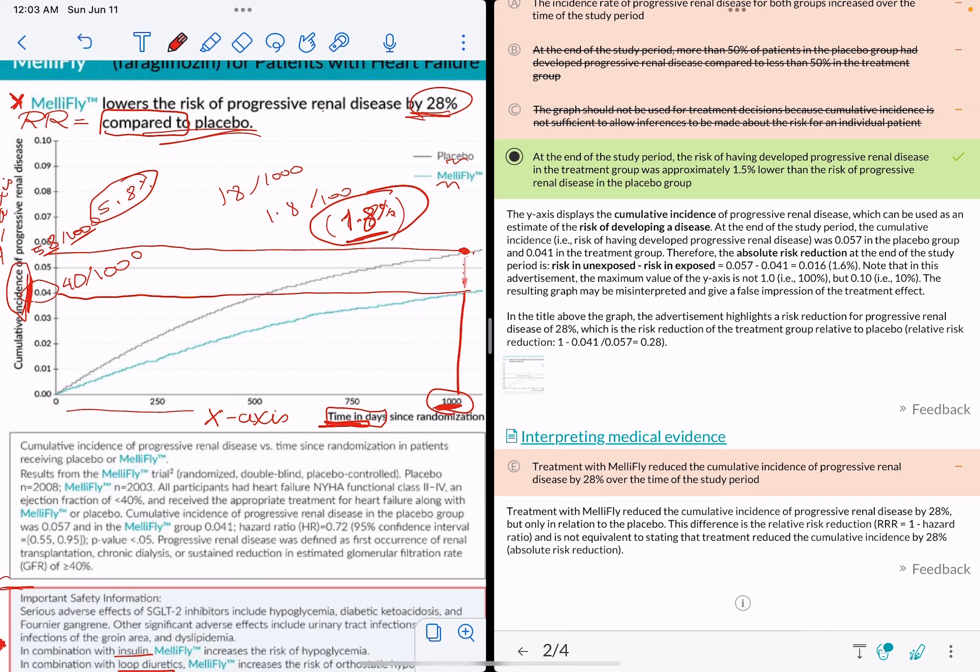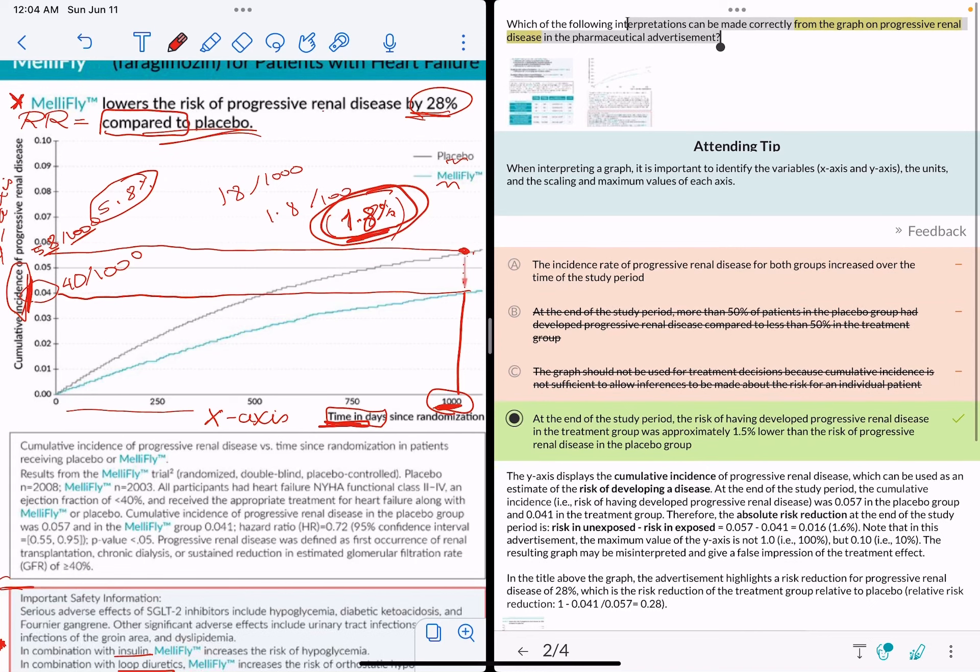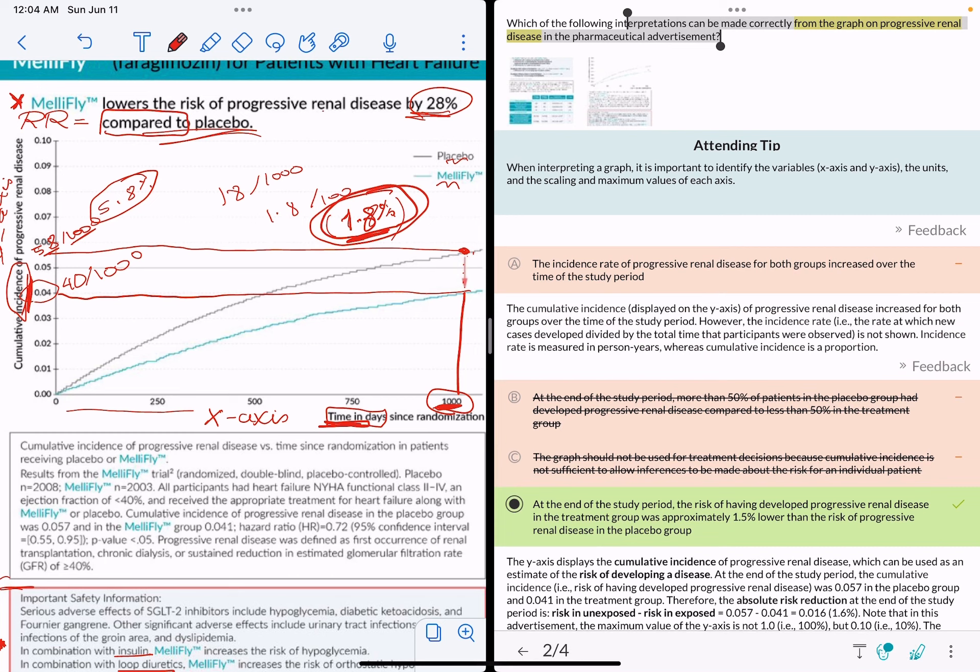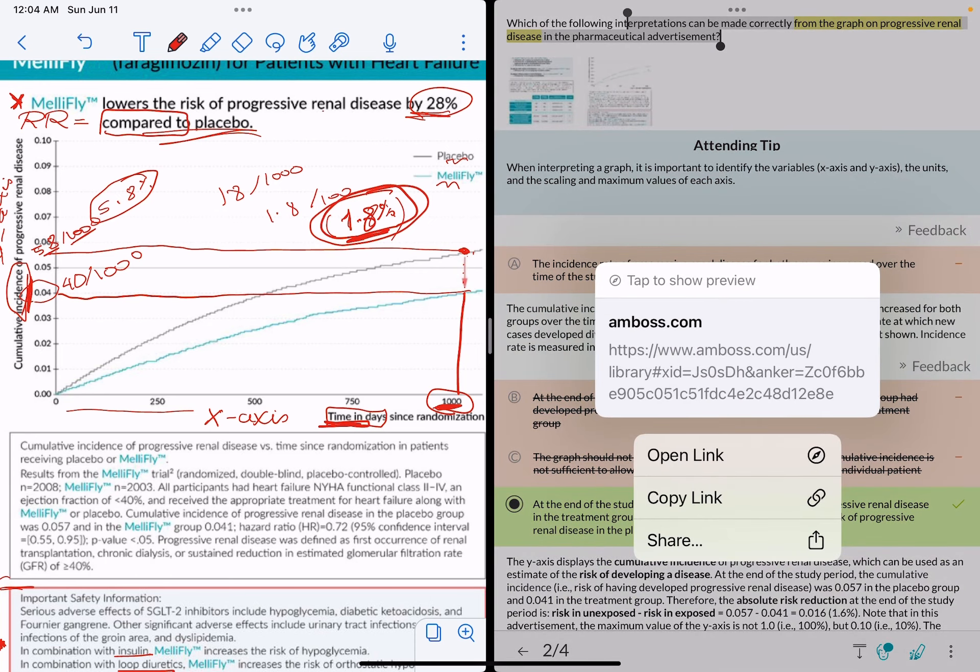It's written here that it lowered the risk by 28% compared to placebo. This is the relative risk, but it actually only reduced it by 1.8% as an absolute value. Okay guys, now why is A incorrect?